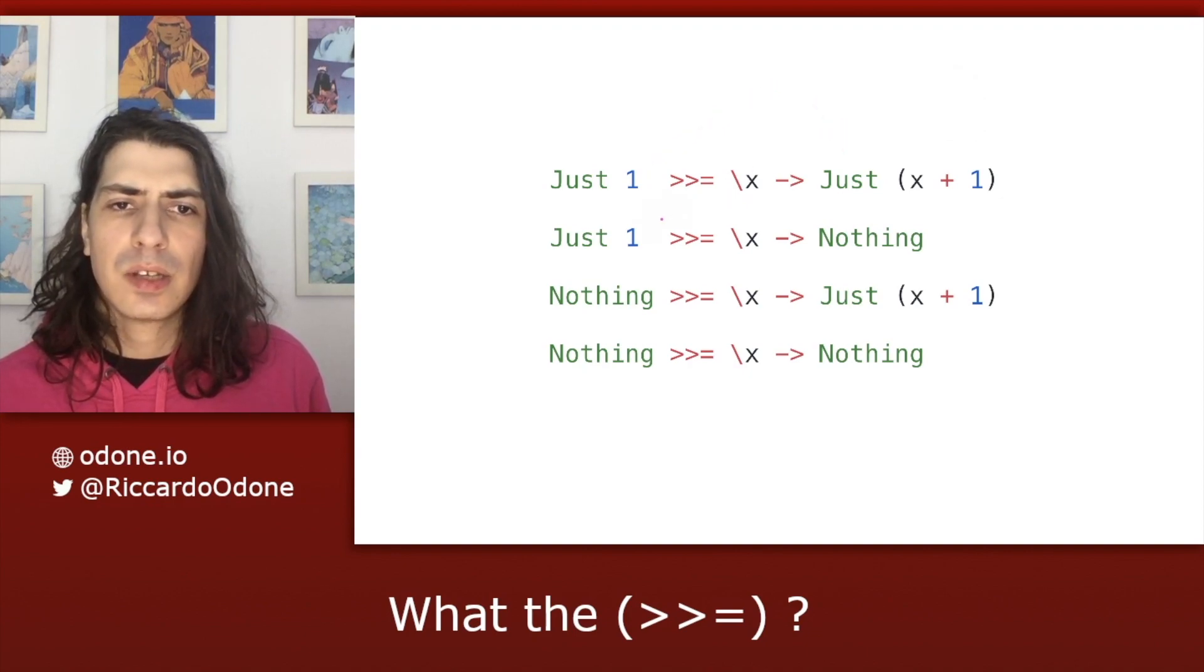In the second case, again we have a Just 1 on the left, which means we can go on and apply 1 to the step function to get back Nothing. And in the last two cases, since we have a Nothing on the left, we short circuit and we return Nothing right away.